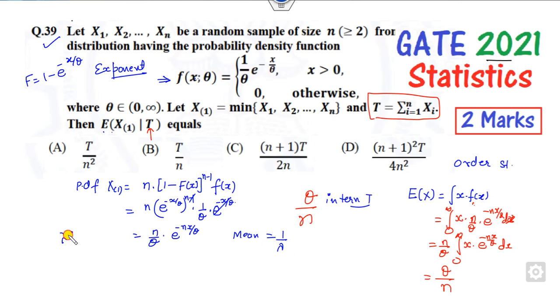if you compare the exponential distribution with this, the mean is θ. The mean is given as T = Σ(Xi)/n. You